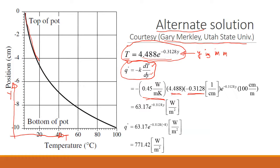So if you do that, then you get this expression of q double prime. And at y equal to minus 8, if you plug in, then you get q double prime equal to 771 watts per meter squared. Notice it is not exact, it is not exact of what we got earlier.